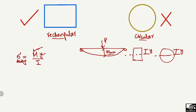Now, if we have a rectangular cross-section and a circular cross-section with the same bending moment M at any point, and we want to find stresses at the same distance Y, then both M and Y are the same for both beams. So the bending stresses depend only on the moment of inertia I.